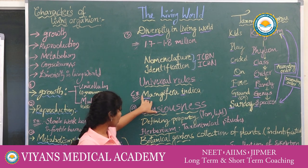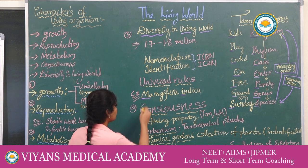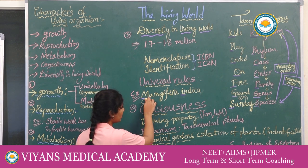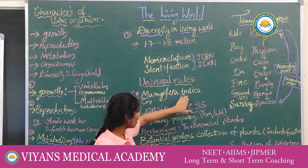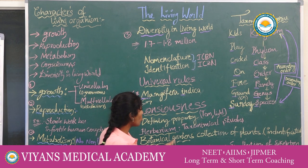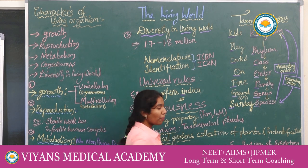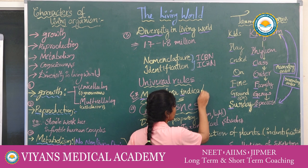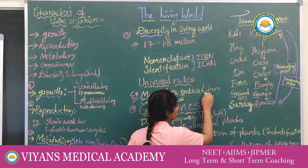In Mangifera indica, 'M' is the genus, represented by a capital letter. In 'indica', 'i' is represented by a small letter — it is the species. Sometimes the author's name is also seen, for example, 'L.' for Linnaeus.